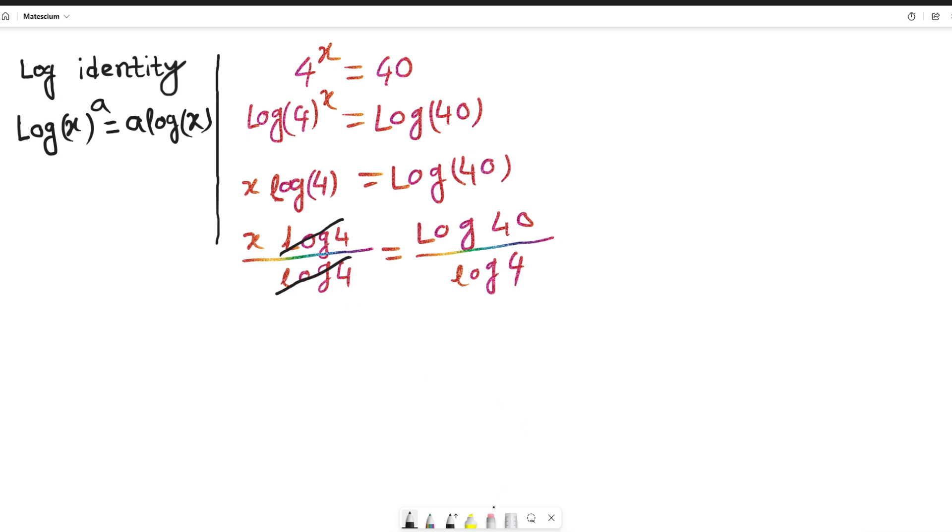Here, left-hand side, this numerator log 4 and denominator log 4 cancel each other, and remaining on the left-hand side is x which is totally free. And the right-hand side is log of 40. This log 40 can be rewritten as log of 4 times 10 divided by log of 4.